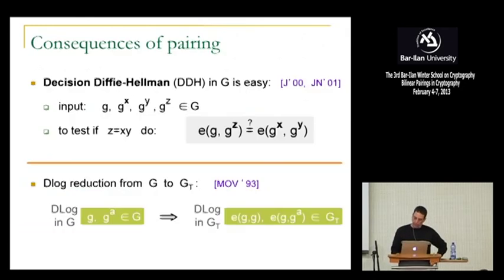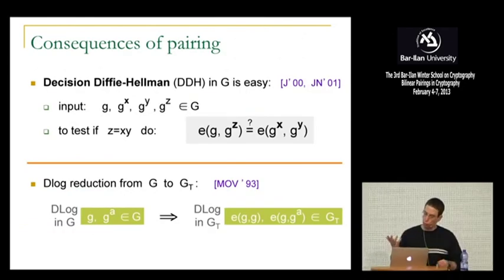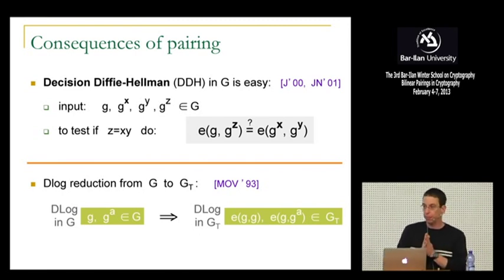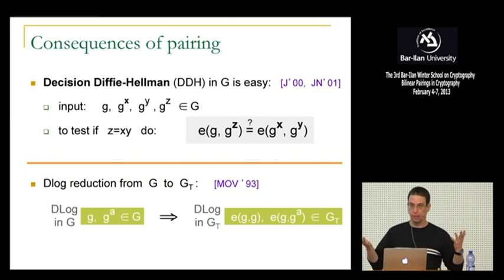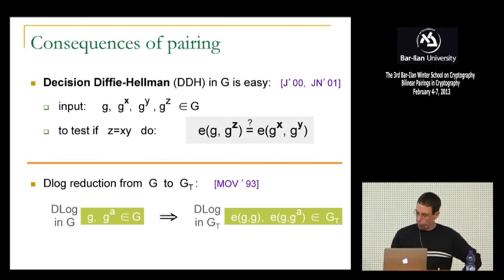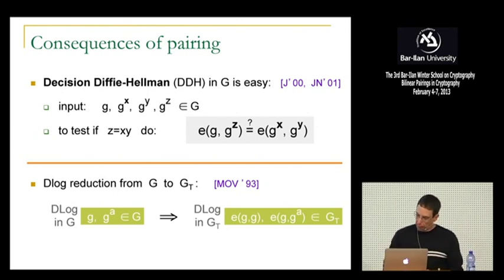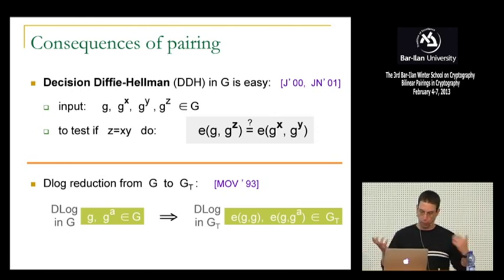Now let's talk about what it means for a group to have a pairing on it. The first implication is that the DDH problem is actually easy. Given G^x, G^y, and G^z, it's easy to test whether z equals x·y simply by checking if pairing(G, G^z) equals pairing(G^x, G^y) — the exponents come out of the parentheses. So the DDH problem is very easy in groups with pairings.